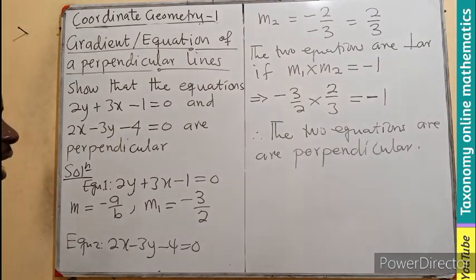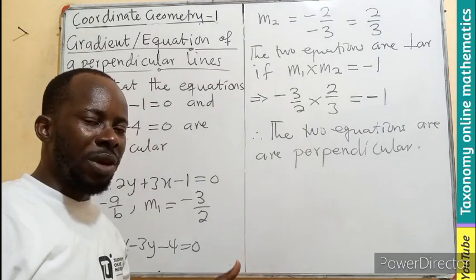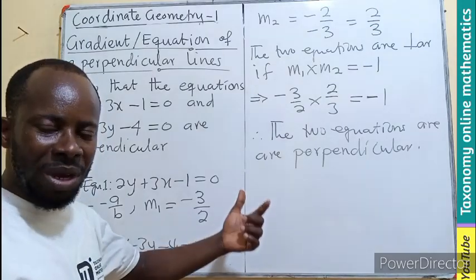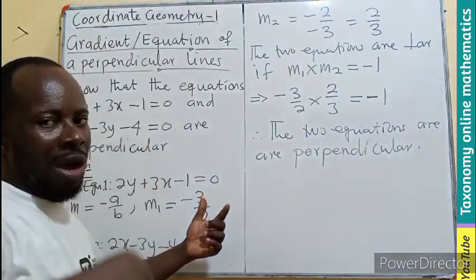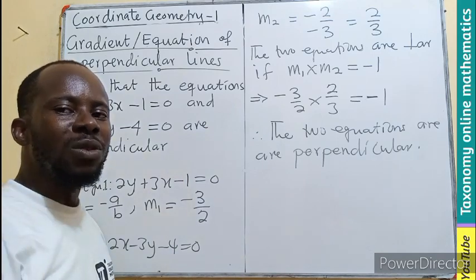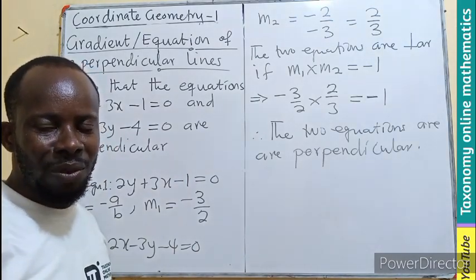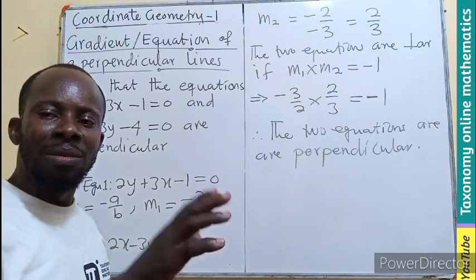So, that is one way by which we can test for it. It will also be given whereby one of the line's equation will be given to you and a point on the other one with a perpendicular will be given. You will be asked to find the equation of the other line. The same concept can be applied. Thanks for watching. Like, share and comment. Bye-bye.